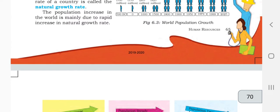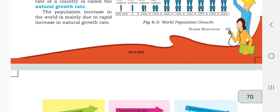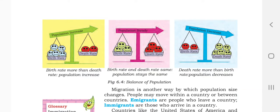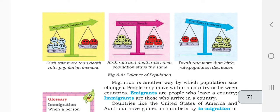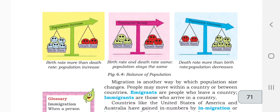Population increase in the world is mainly due to the rapid increase in natural growth rate. Three diagrams show: first, population increases when birth rate is more than death rate. In the middle diagram, birth rate and death rate are similar — in balance — and that is called population steady. The last diagram shows population decrease: birth rate is very low and death rate is more than birth rate, and that is called population decrease.